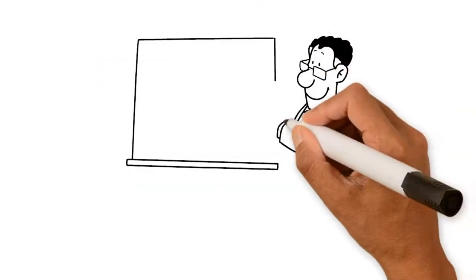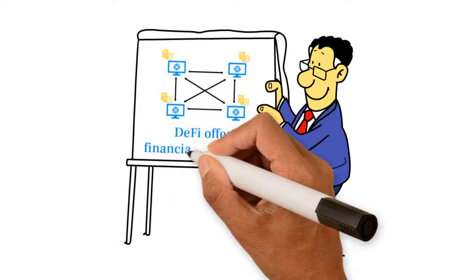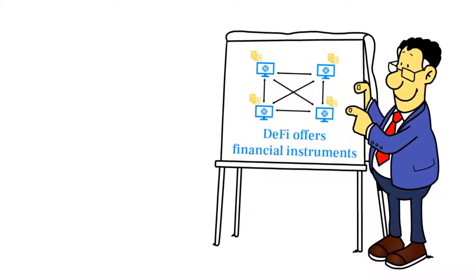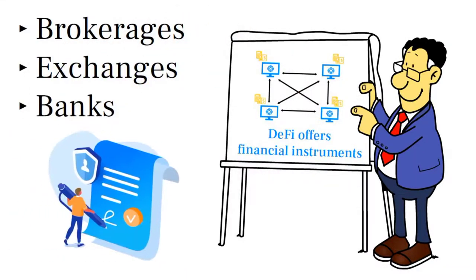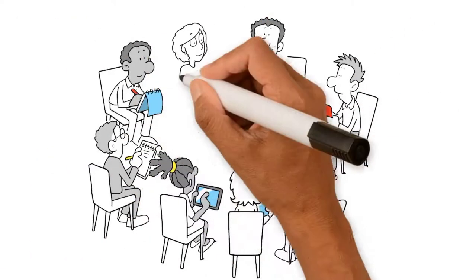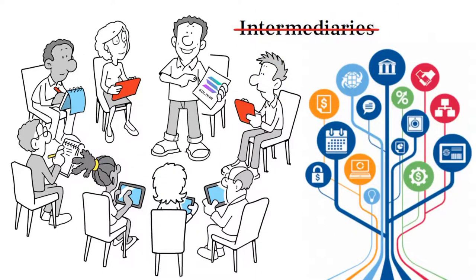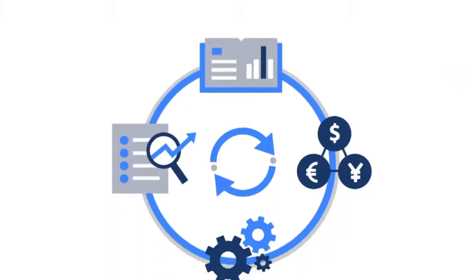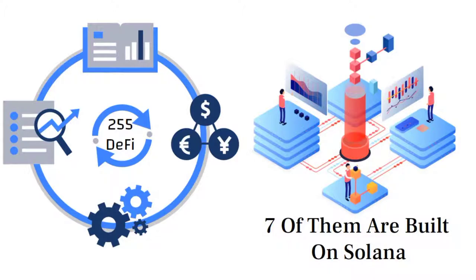Well, there is something you need to know about decentralized finance as well. Decentralized finance or DeFi offers financial instruments without relying on intermediaries such as brokerages, exchanges, or banks by using smart contracts on a blockchain. It is the movement that leverages decentralized networks to transform old financial products into trustless and transparent protocols that run without intermediaries. There are 225 DeFi projects listed and seven of them are built on Solana on defiprime.com.